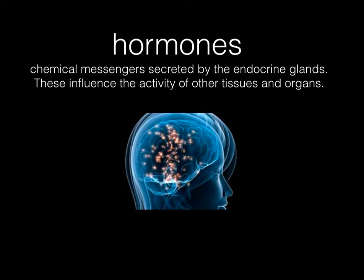The first vocabulary word we're going to talk about today — basically the basis of the endocrine system — is hormones. Hormones are chemical messengers that are secreted by the endocrine glands, and they influence the activity of other tissues and organs. They're basically sent out throughout the body within the blood, and they tell organs of our body what to do and how to maintain homeostasis within the body.